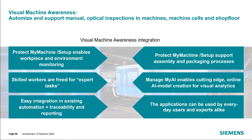With our Visual Machine Awareness applications that Siemens offers, we're trying to address this machine vision use case in an easy-to-use manner. The primary application I'm going to show you today is called Protect My Machine Setup — it allows you to do workpiece identification, feature-based identification, and a variety of different machine vision tasks. Going with these AI-based systems will free up your workers for higher-level tasks and give you traceability within your production environment, all without requiring high-level technical expertise.